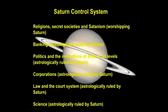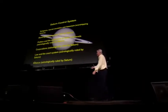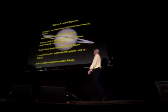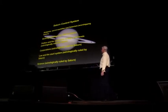Looking astrologically — in other words, energetically — banking is astrologically ruled by Saturn. Politics and institutions of state at all levels, astrologically ruled by Saturn. Corporations, astrologically ruled by Saturn. Law and the court system, astrologically ruled by Saturn. Science, astrologically ruled by Saturn. Saturn worship is Satan worship.